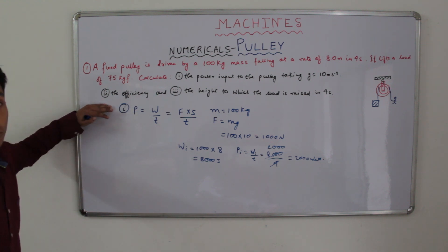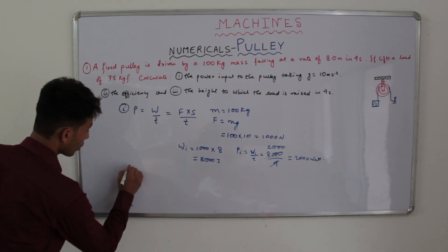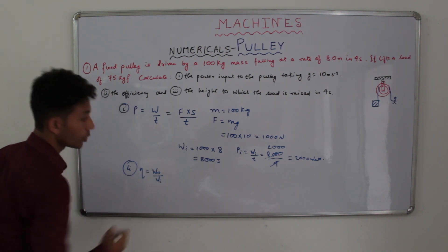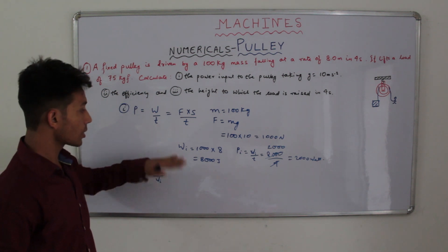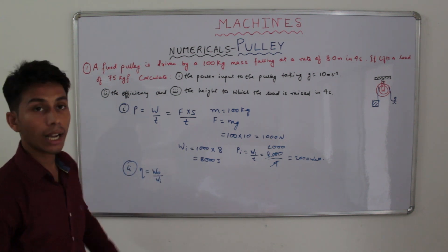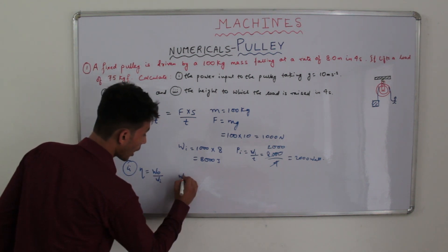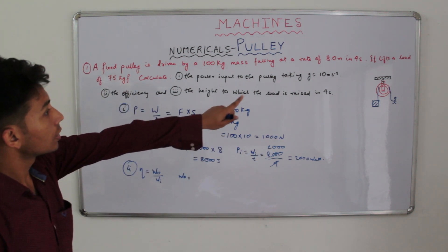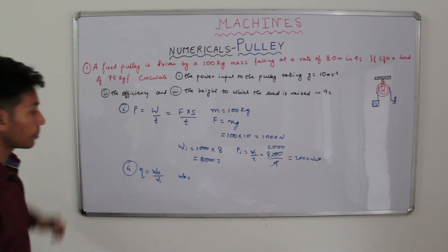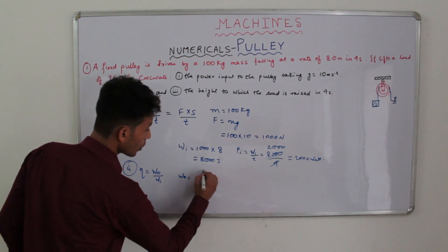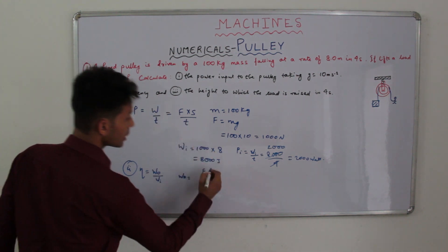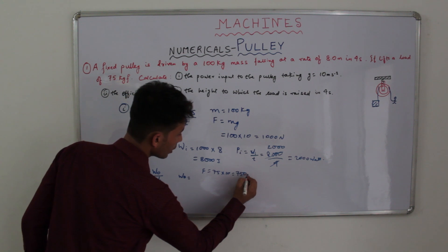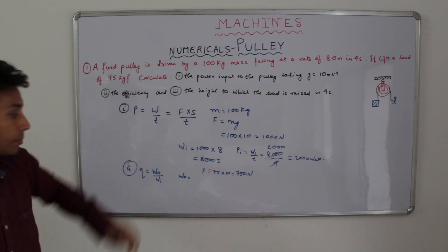The second part is efficiency. We know efficiency equals work output divided by work input. We have found the work input in the previous section; now we need to find the work output. Work output equals force into displacement. We have the load as 75 kgf, so the weight equals 75 into 10, that is 750 Newton.